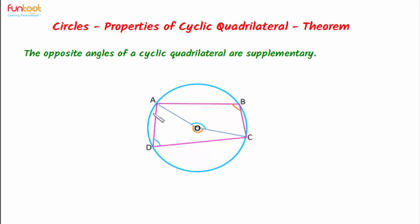ABCD here is a cyclic quadrilateral because vertices A, B, C and D lie on the circle.